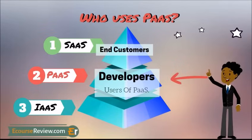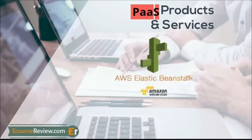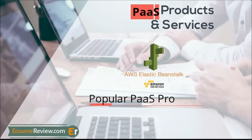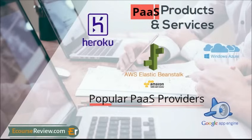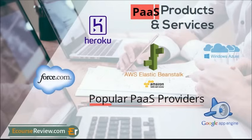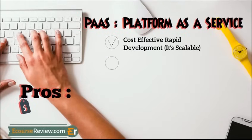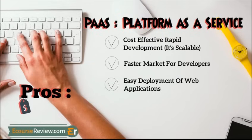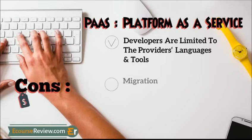Who uses PaaS? This is a domain for developers. Cloud providers offer the following PaaS products and services: Amazon Web Services Elastic Beanstalk, Google App Engine, Windows Azure, Heroku, and Force.com. Pros: cost-effective rapid development, scalable, faster time to market for developers, easy deployment of web applications, and private or public deployment is possible. Cons: developers are limited to providers' languages and tools, and migration issues such as the risk of vendor lock-in.